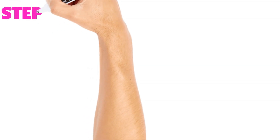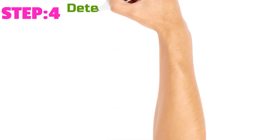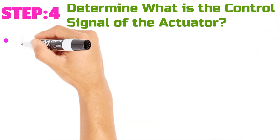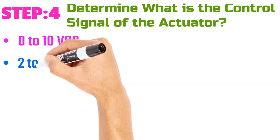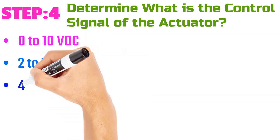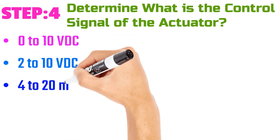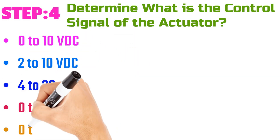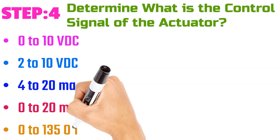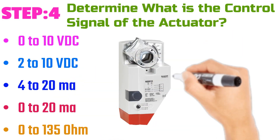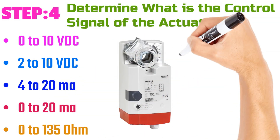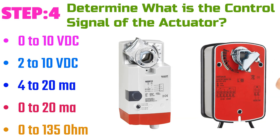Step number four: Determine what is the control signal of the actuator — zero to 10 volt DC, two to 10 volt DC, four to 20 milliampere, zero to 20 milliampere, or zero to 135 ohm.